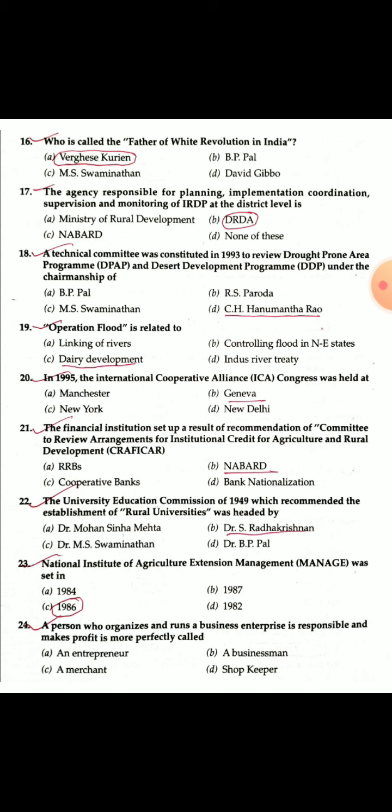Question 22: The University Education Commission of 1949, which recommended the establishment of rural universities, was headed by Dr. Sarvepalli Radhakrishnan. He recommended to the government that agricultural universities should be established in every rural society.